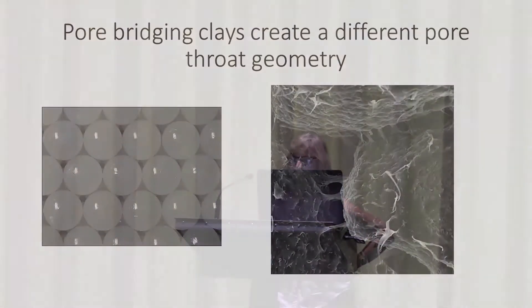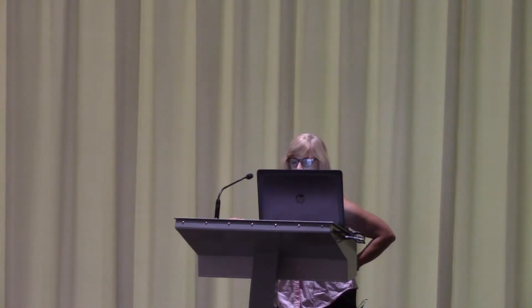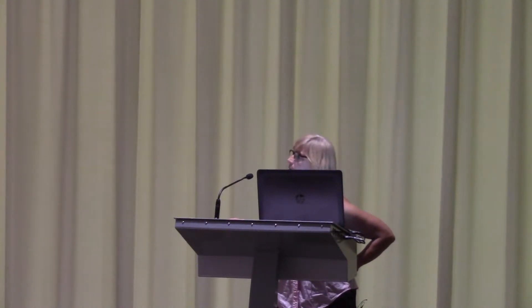And then if we look at it at 2,000 power, these are pore-bridging ilites. They are flow barriers — or can be flow barriers. So again, we have to consider all these things that are occurring in nature when we're using this as our model.